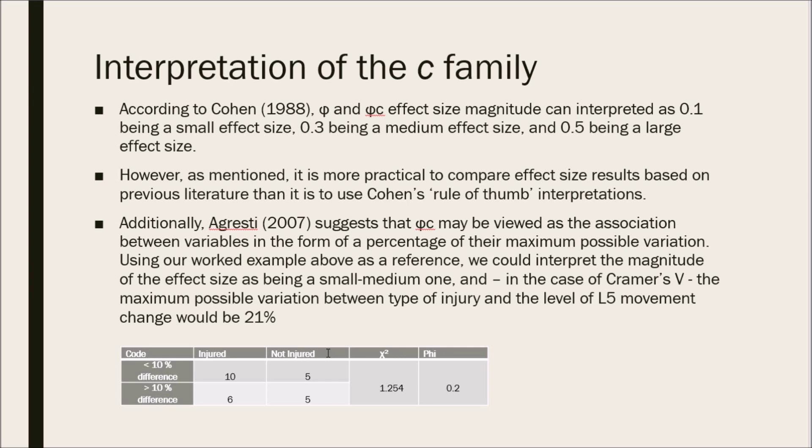Additionally, Agresti in 2007 suggests that Cramer's V may be viewed as the association between variables in the form of a percentage of their maximum possible variation. Using our worked example above as a reference, we could interpret the magnitude of the effect size as being a small to medium one, and in the case of Cramer's V, the maximum possible variation between the type of injury and the level of L5 multifidus movement change would be 21%.